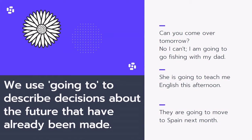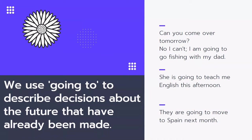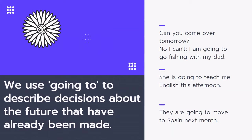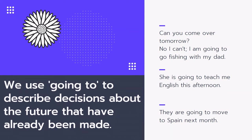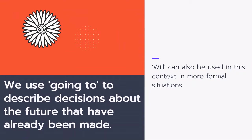We use going to to describe decisions about the future that have already been made. For example: 'Can you come over tomorrow?' 'No, I can't — I'm going to go fishing with my dad.' I've already made the decision to go fishing. 'She is going to teach me English this afternoon' — she's already decided. 'They are going to move to Spain next month' — the decision is already made. We can use will here too, but going to is recommended.